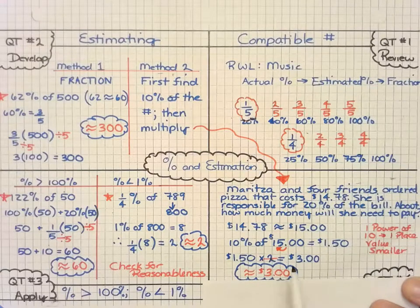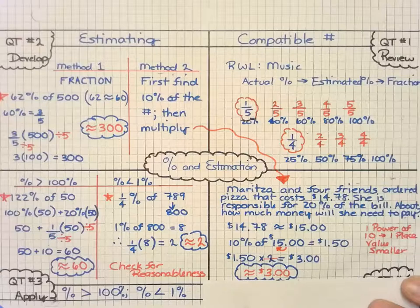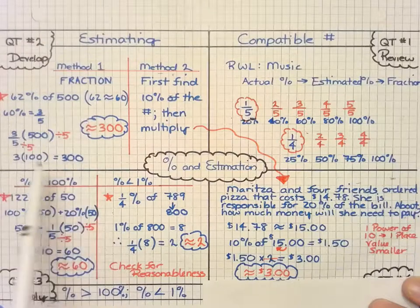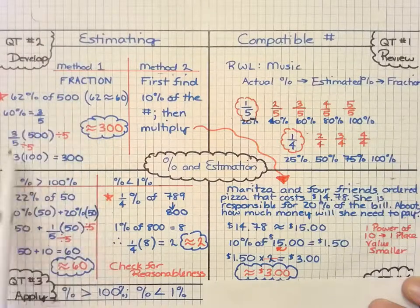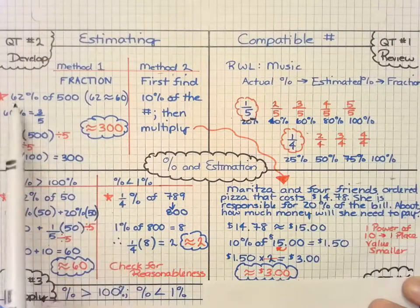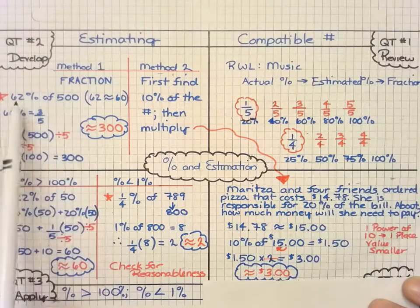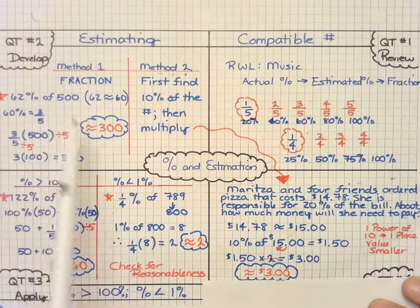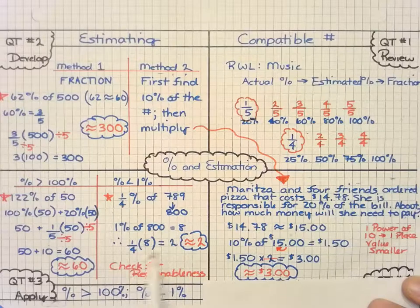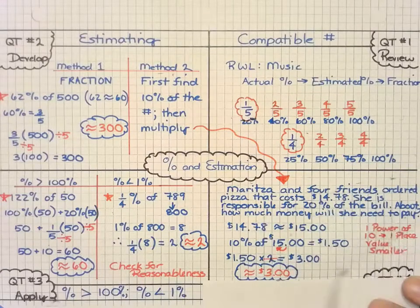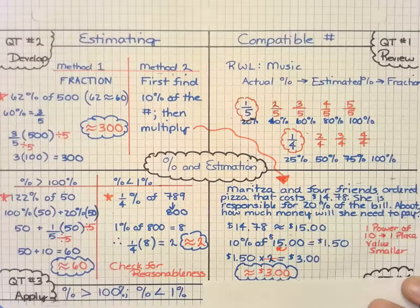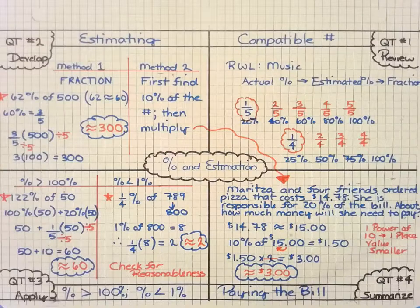And again, approximate because we're estimating. So in summary, remember that we want to find compatible numbers from our percentages, use those to find our answers a little more quickly and be able to simplify a little quicker, and to check for reasonableness. Does $300 seem to make sense? If I have about 60% of $500, I know 50% of $500, which is half, is $250, then that seems to be reasonable. Also consider things that are greater than 100% and less than 1%. And this is something that happens a lot when we go out to eat with our friends or family. This is something that I've had to be able to keep in mind.